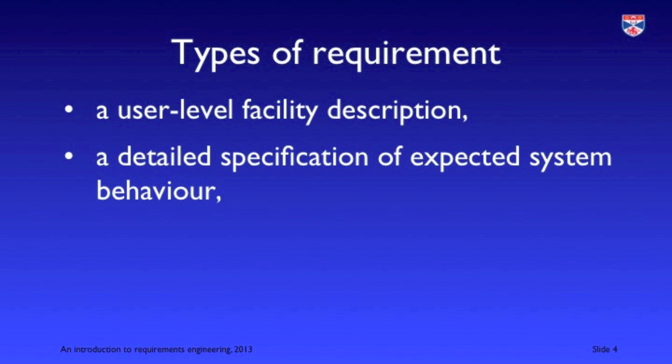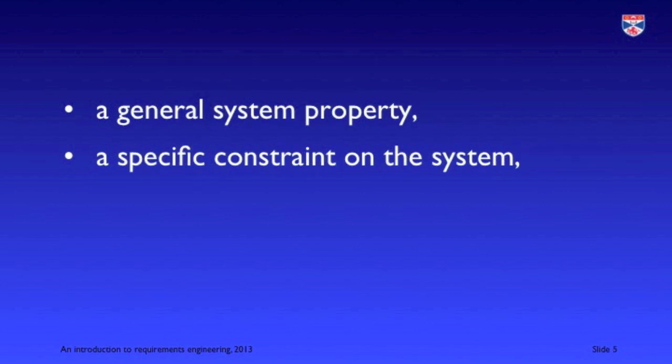That general definition — what the system should do — actually translates into a number of possibilities, so there are lots of different kinds of requirements. You may have requirements which define a user-level facility or feature of the system, a very detailed specification of system behavior such as how to stop a train, or a description of a very general property such as one of the dependability properties.